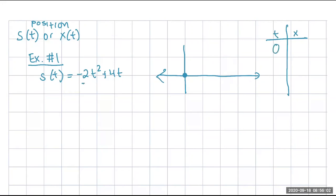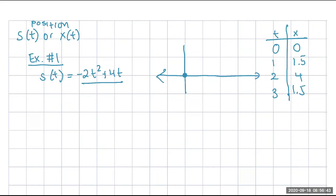Plugging in 1 gives 1½; plugging in 2 gives 4; plugging in 3 gives 1½. So at 0 you start at the origin, after 1 second the particle went from 0 to 1½ on the X-axis, after 2 seconds it went to 4. Then at 3 it goes back to 1½ — so it changed direction at some point and moved back. That's a movement to the left.